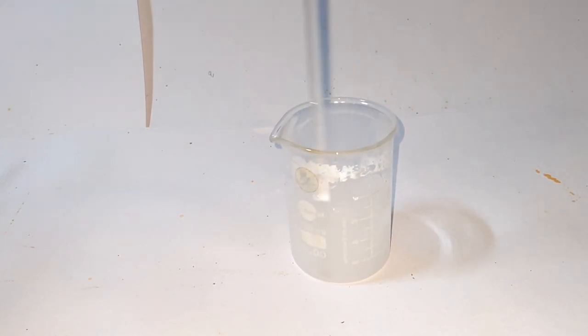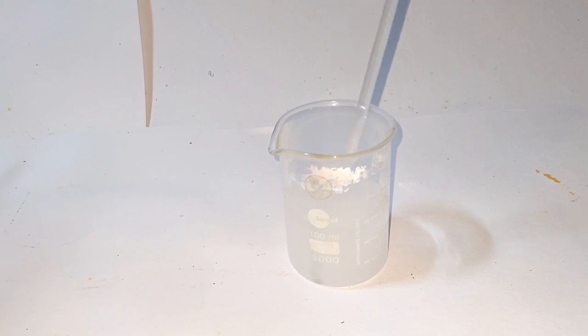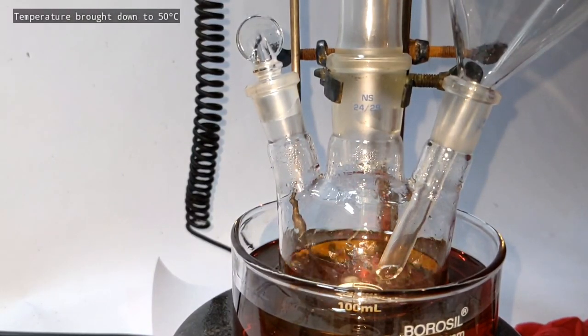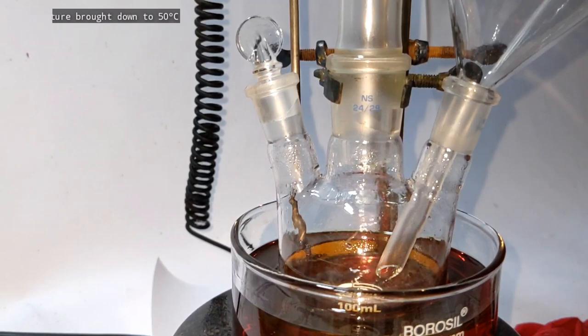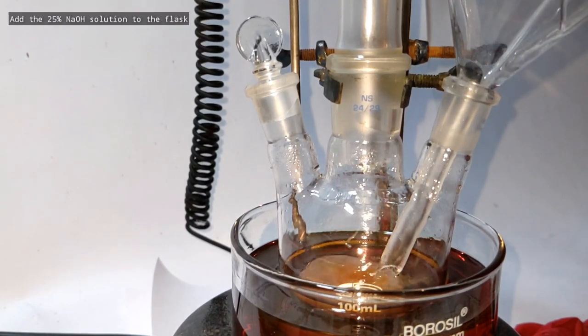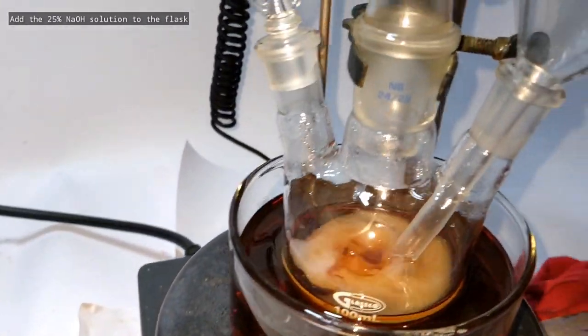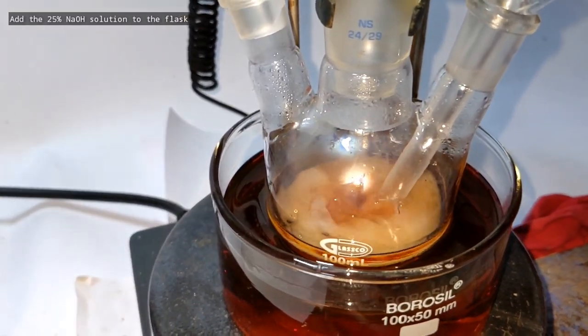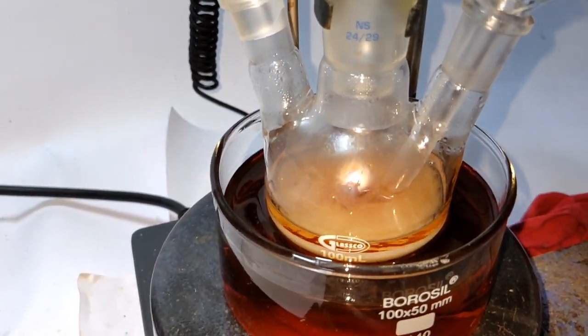After one hour of reflux the temperature is brought down to 50 degrees Celsius and then 25 ml of this 25% sodium hydroxide solution is added to the flask. Continue the reflux for another 30 minutes.